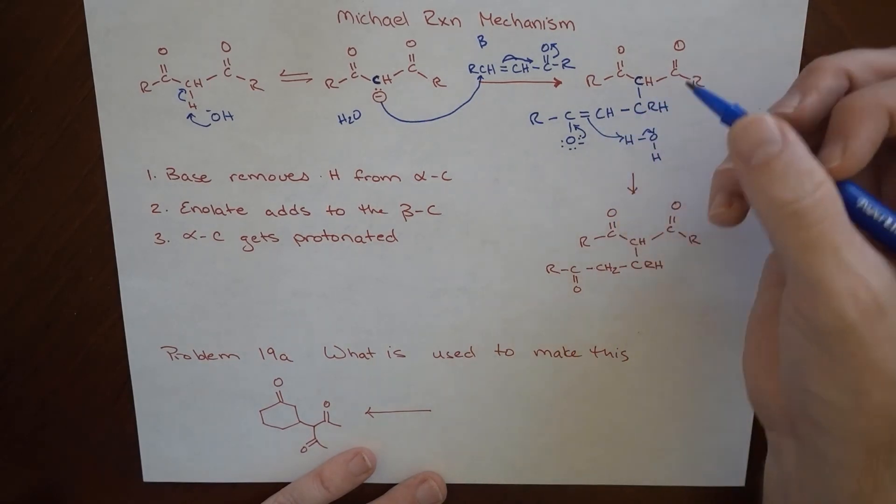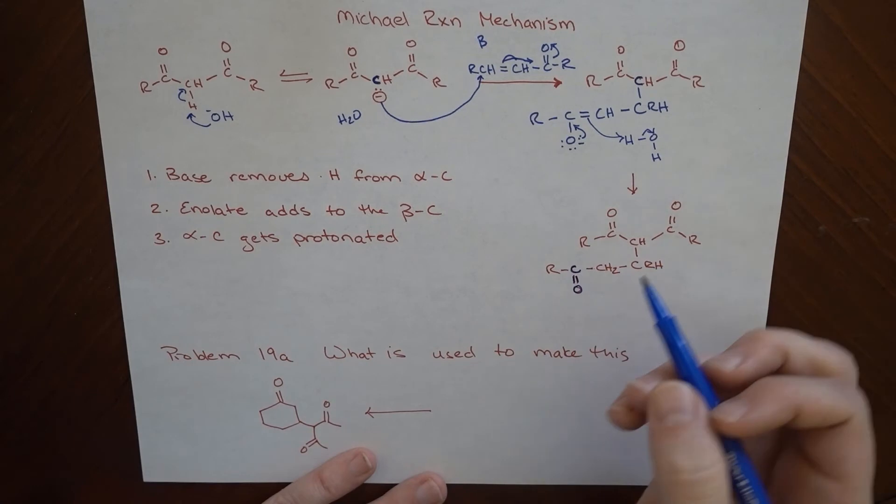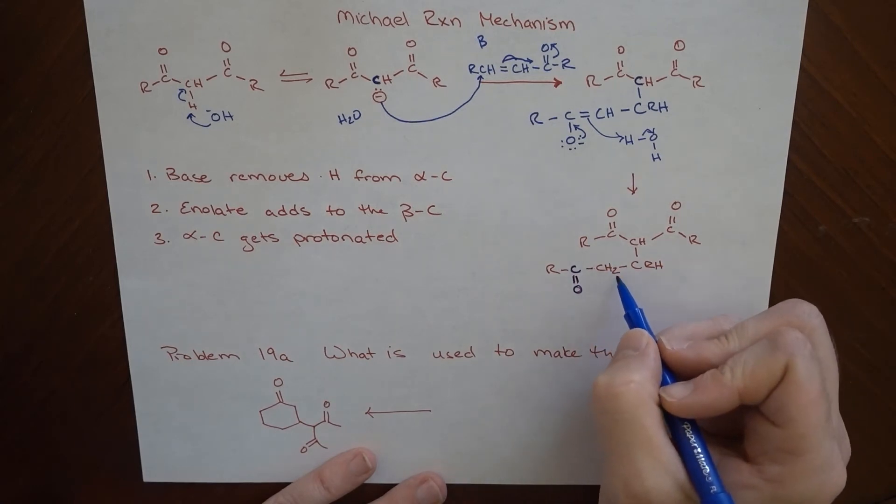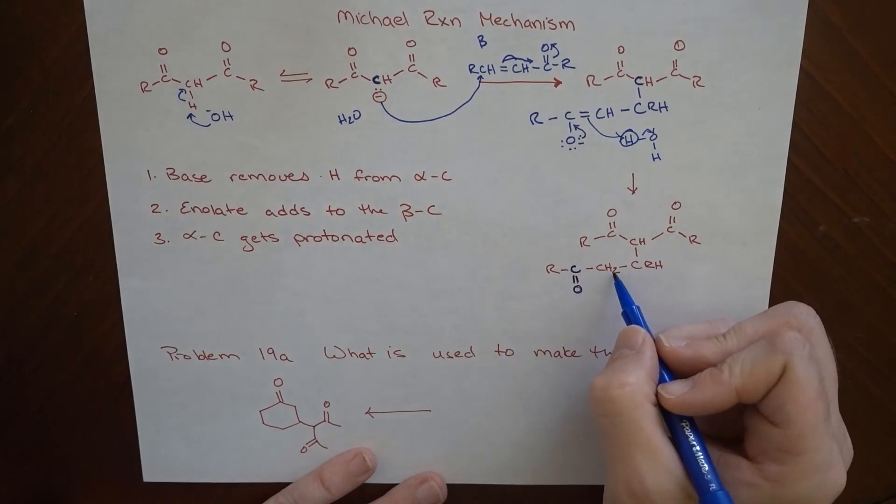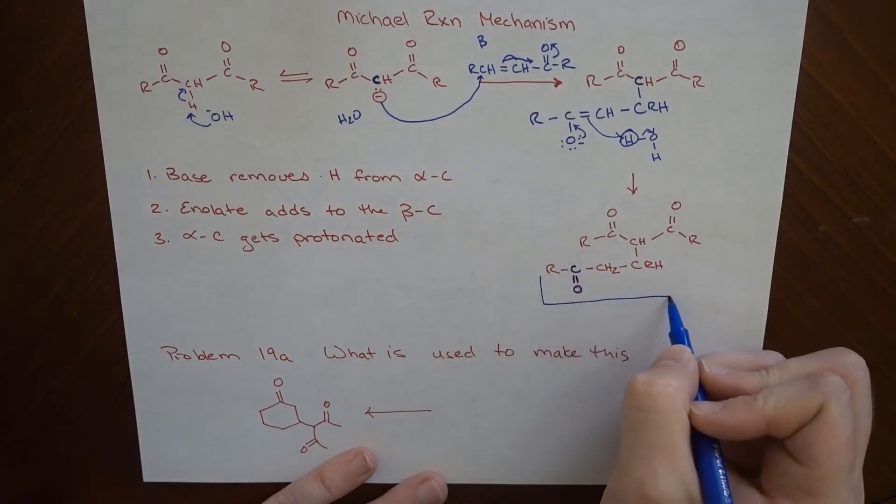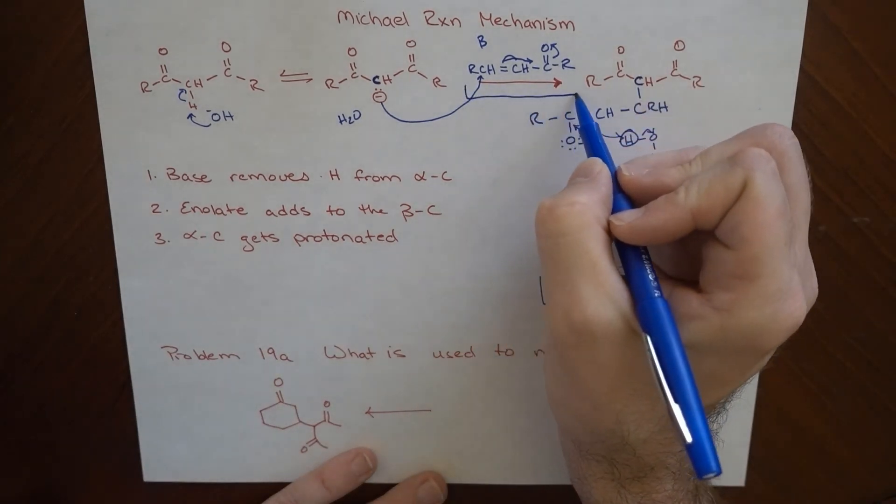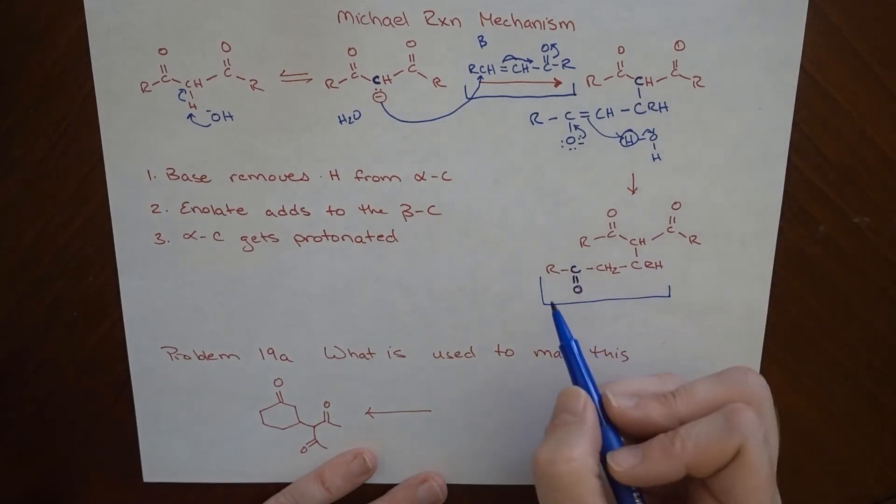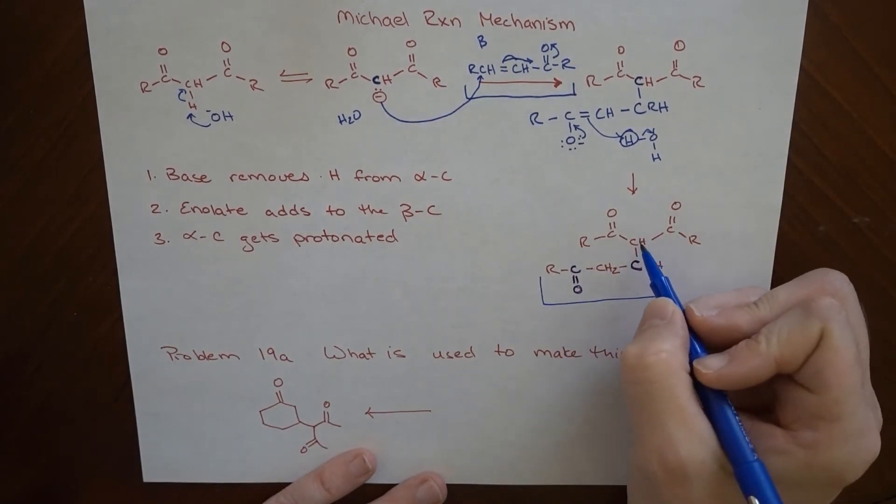So what we're going to end up forming is here is our C double bond O in our main product. The CH2, this second hydrogen, came from right here. And so I hope you can see that this molecule, or this part of the molecule here, is still more or less intact what we had that was up here. So we basically just added this on at the beta carbon.